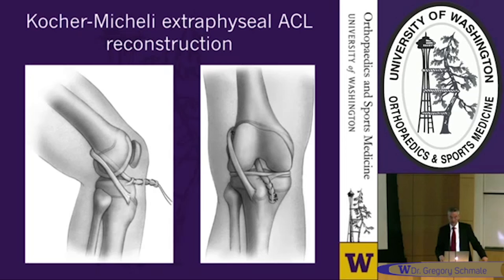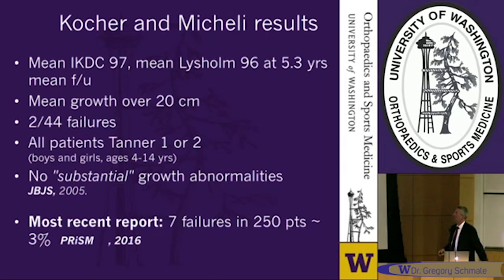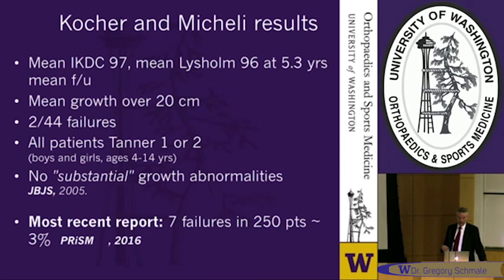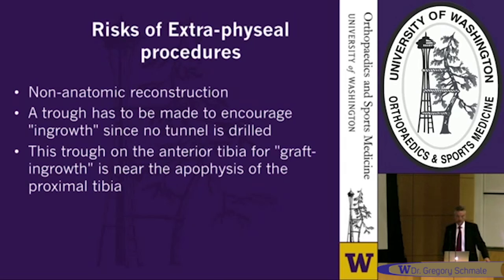When first reported in JBJS in 2005, they had a low failure rate — only 2 of 44. These were skeletally prepubescent patients, very immature, ages 4 to 14. They saw no substantial growth abnormalities. More recently they reported again a really low failure rate, less than 3% in 250 patients followed to skeletal maturity. However, it makes for quite a horizontal graft — not a very anatomic reconstruction in terms of tibial insertion placement. The trough for ingrowth is quite close to the apophysis of the proximal tibia, so there is risk of growth arrest.